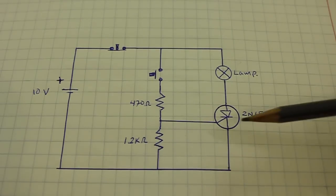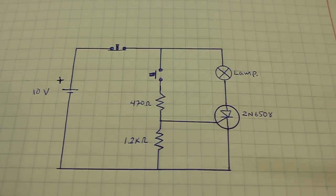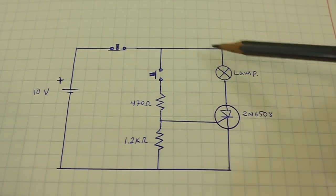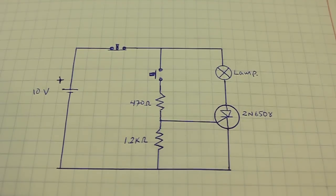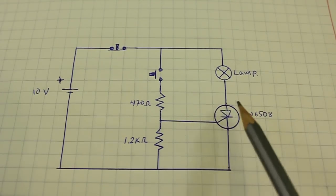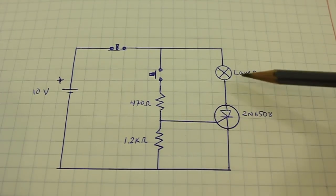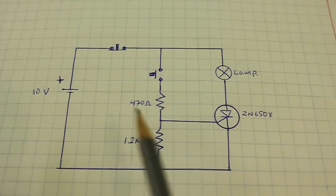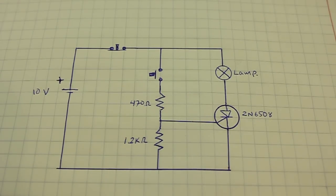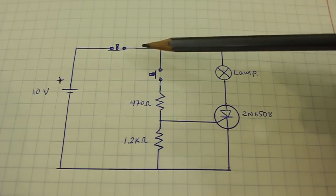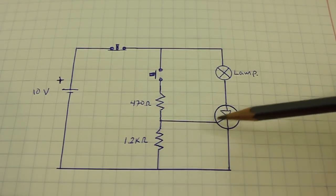Initially, the thyristor is off so the current cannot flow through the lamp. In order to turn on the thyristor and therefore the lamp, we must press this normally open switch and the current will flow into the gate.